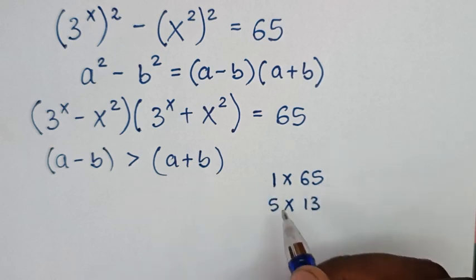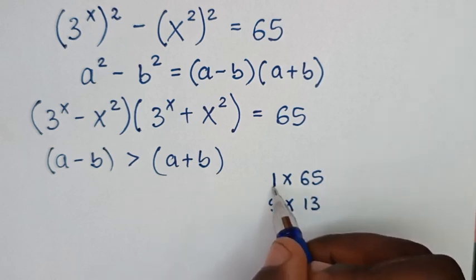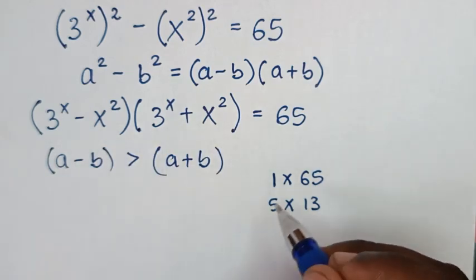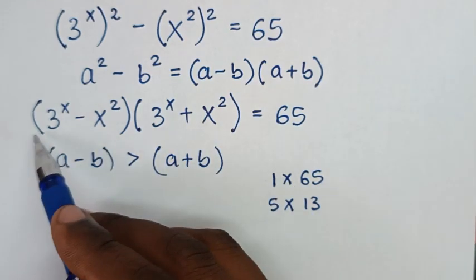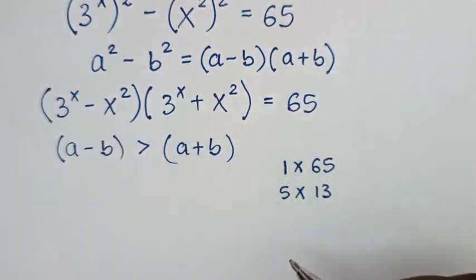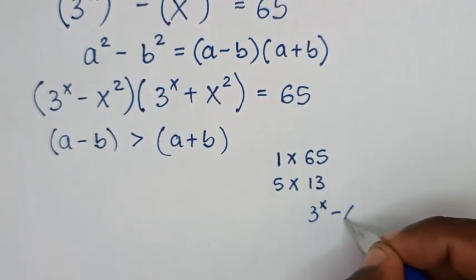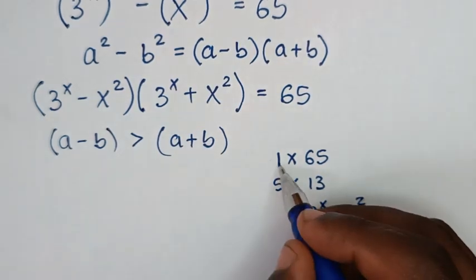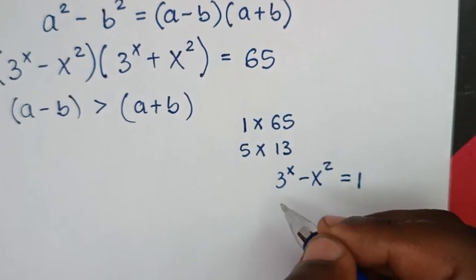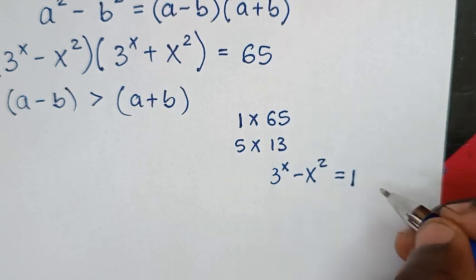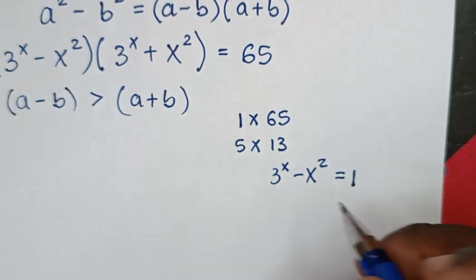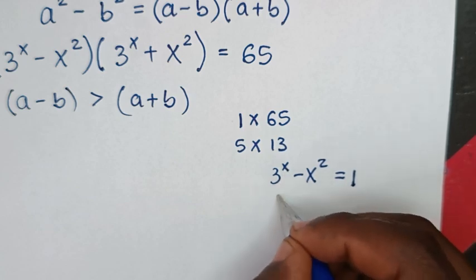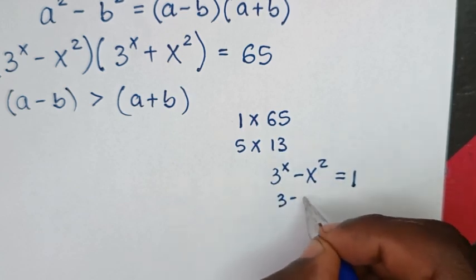For the pair 1 and 65: 1 is less than 65, so we compare the smaller factor with (a minus b). So 3 power of x minus x squared would equal 1 for the first choice. But this cannot equal 1 as a natural number. When we substitute x equal to 1, it will be 3 power of 1 minus 1 squared, which is 3 minus 1 equals 2. It is not equal to 1. So this first possibility is not correct.